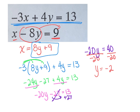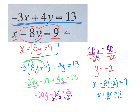And then to solve, just plug it back in. You can use either equation. If I use this one, it would be x minus 8 times negative 2 equals 9. Negative 8 and negative 2 are positive 16. So x plus 16 equals 9. Then subtract your 16. x equals negative 7. So my answer here is x, y: negative 7, negative 2.